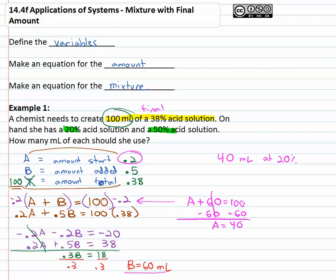We've got sixty of the B, sixty milliliters at B was at fifty percent. Mix this together and we'll end up with that hundred milliliters of a thirty eight percent acid solution.